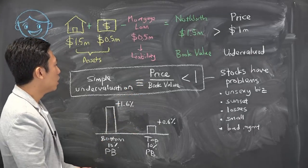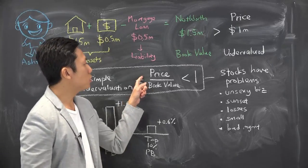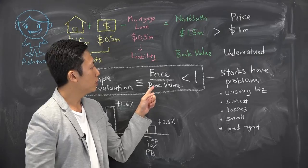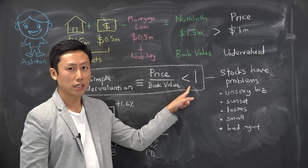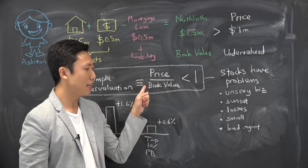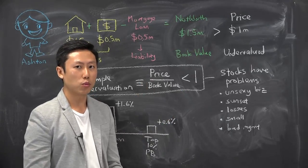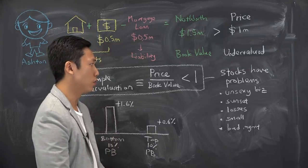If you use this ratio called a P/B ratio or price to book value ratio, if this ratio is less than 1, essentially you're saying that the price is less than the book value. This is the most simplest way to determine whether a stock is undervalued or not.